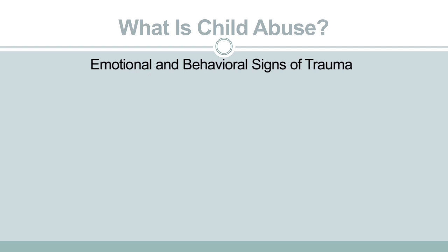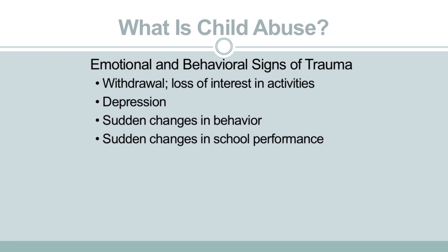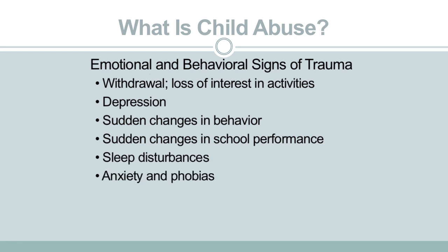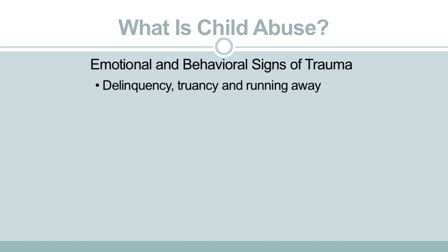Emotional and behavioral signs of trauma often seen in child abuse victims include withdrawal and a loss of interest in activities, depression, sudden changes in behavior, sudden changes in school performance, sleep disturbances, anxiety and phobias, hypochondria, fear of certain people, age-inappropriate sexual knowledge or behavior, delinquency, truancy, and running away, and behavior extremes such as a child who is overly compliant or overly aggressive.